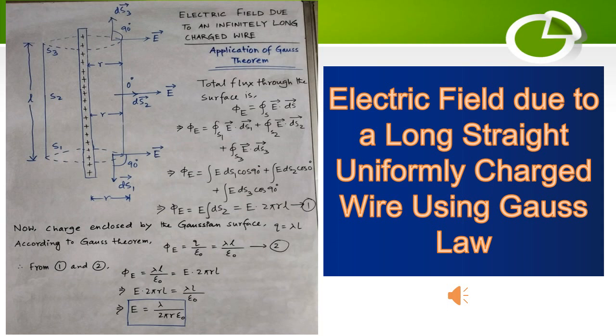Total electric flux means at s1: surface integral E dot ds1, at s2: surface integral E dot ds2, at s3: surface integral E dot ds3. If you do the sum of these three, you will get the total flux over this curved surface.